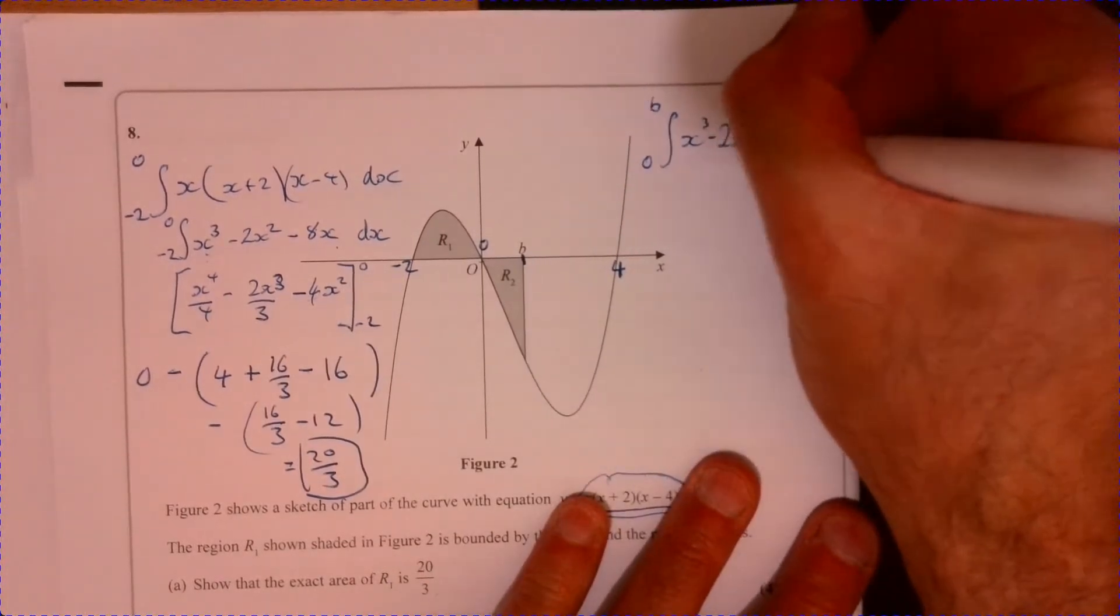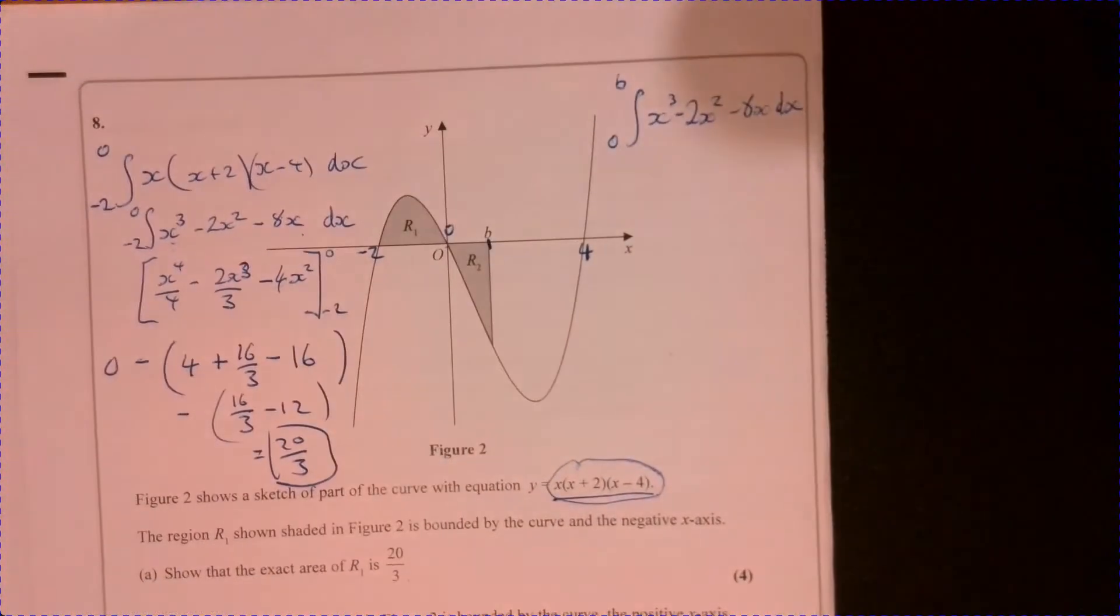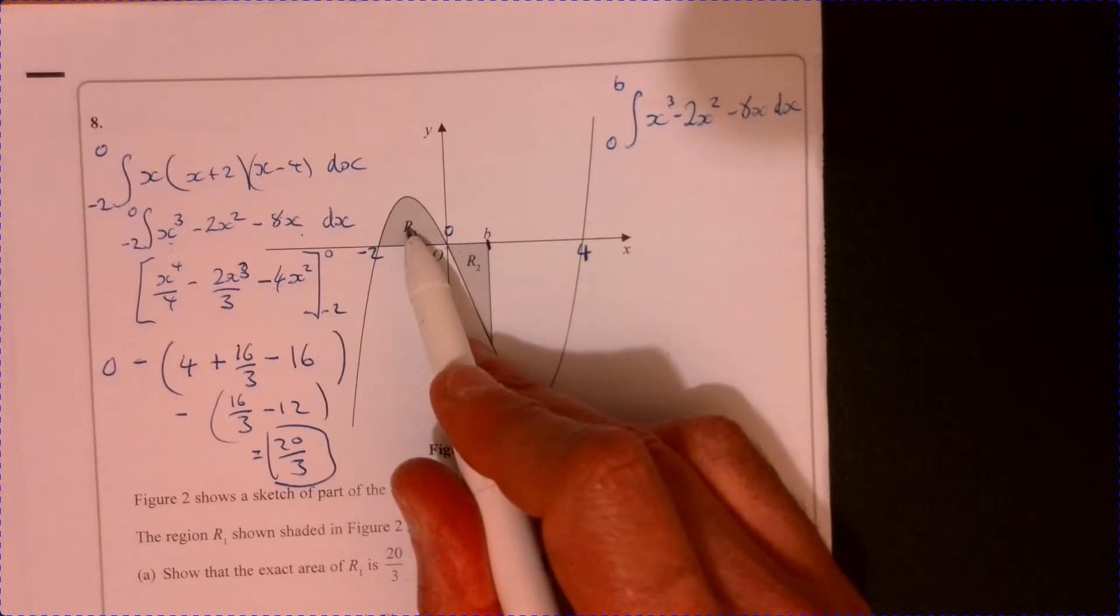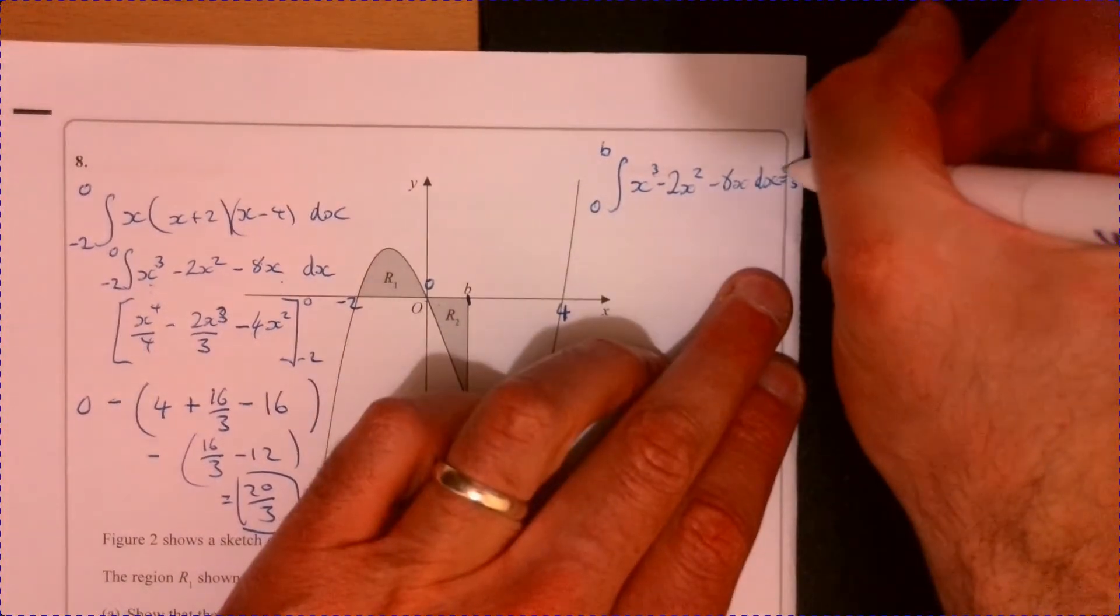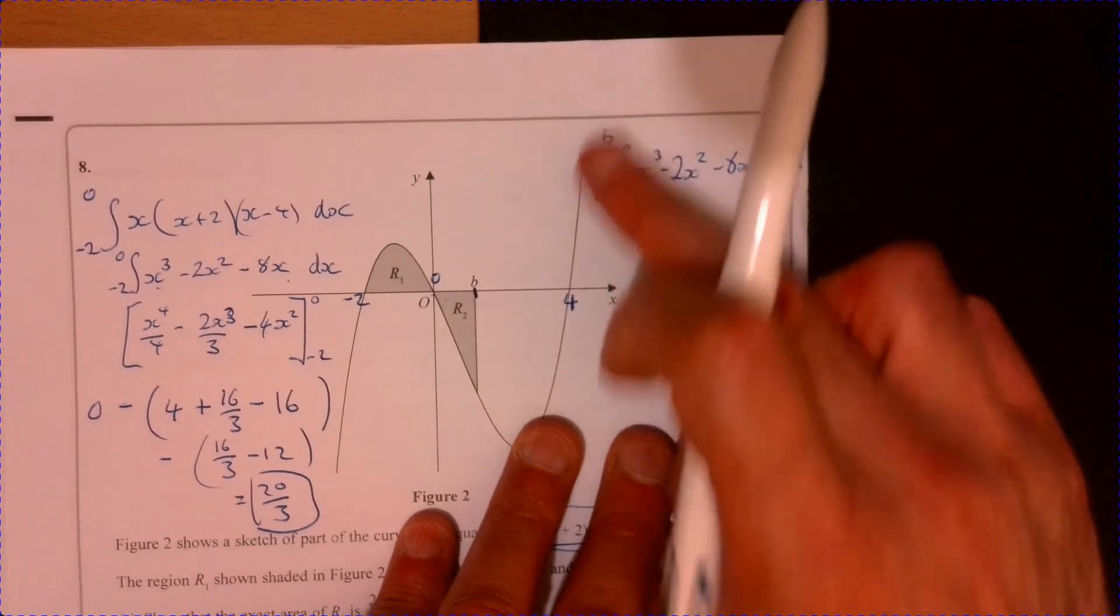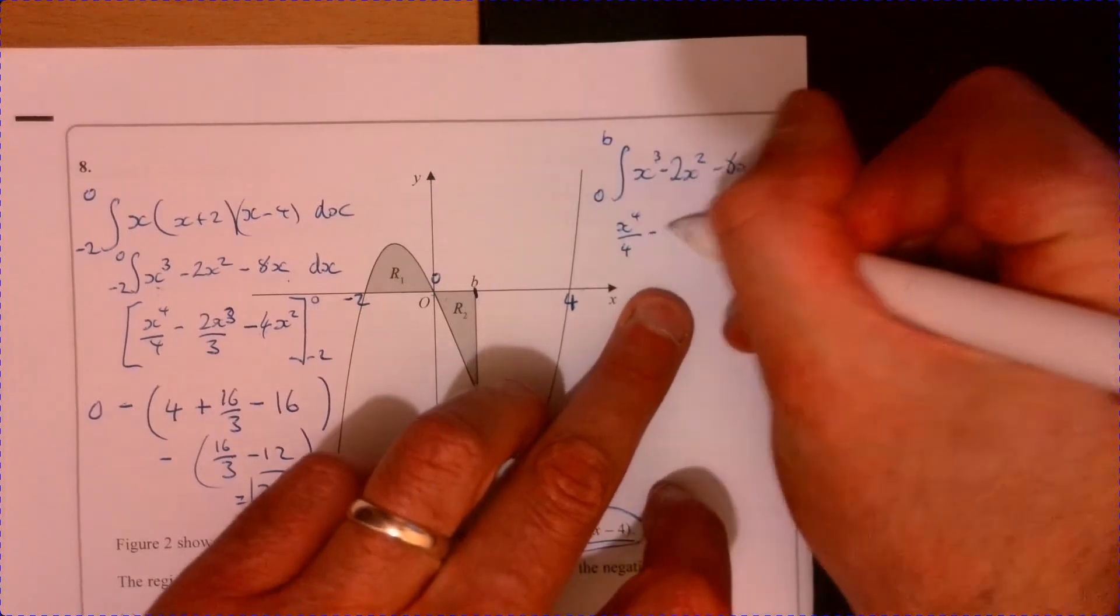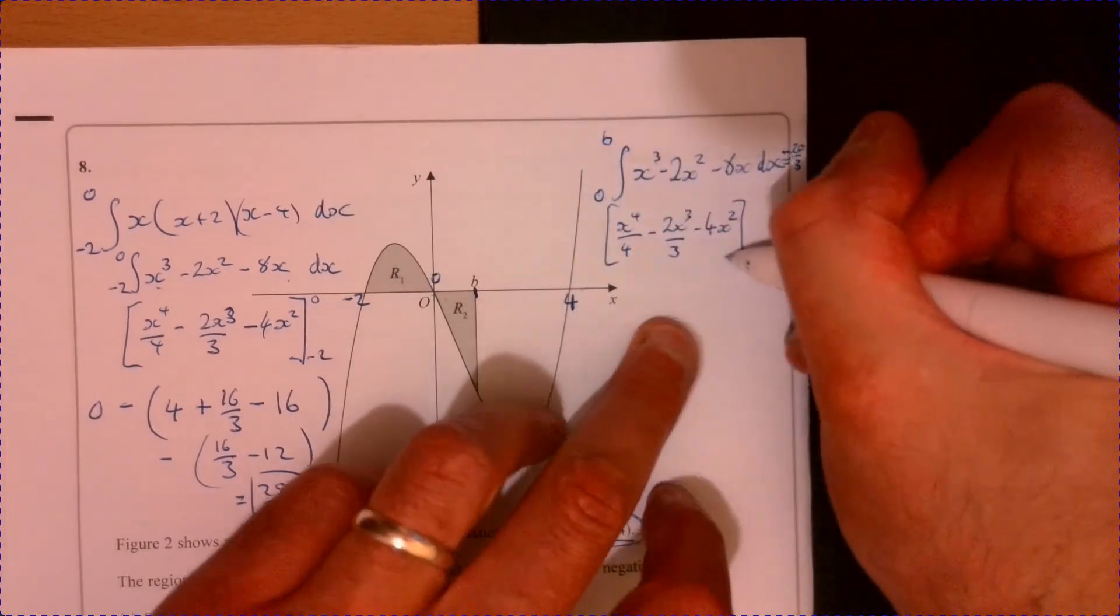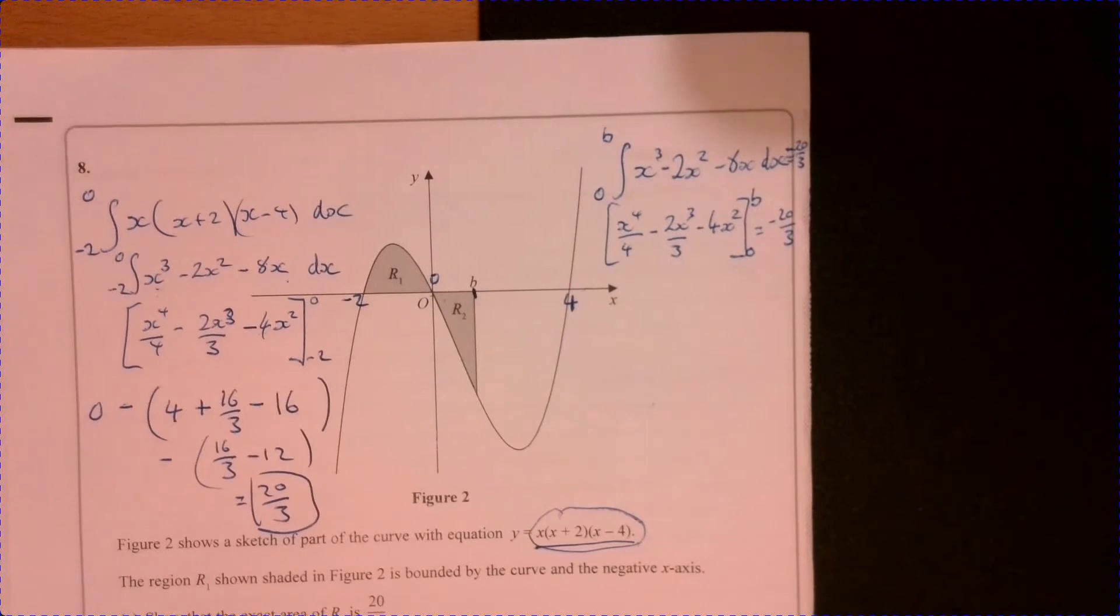Basically, we've been asked to integrate from zero to B this expression just here. So we've got x cubed minus 2x squared minus 8x dx. Now, we know the answer is below the x axis, so it's going to be, it's the same as this. So it's actually going to be minus, it's equal to minus 20 over 3. Let's make sure we've got a nice clear minus there.